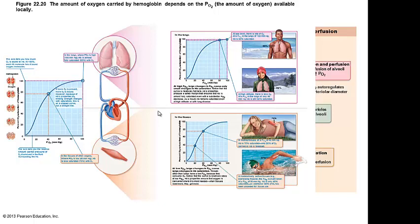Ischemic or stagnant hypoxia — there's something blocked; the blood isn't able to flow to those areas. Histotoxic hypoxia has to do with an imbalance — it could be metals, things like cyanide for example, it could be chemical. Hypoxemic hypoxia — that's the ventilation and perfusion issue, and it's usually related to some sort of cardiovascular disease.